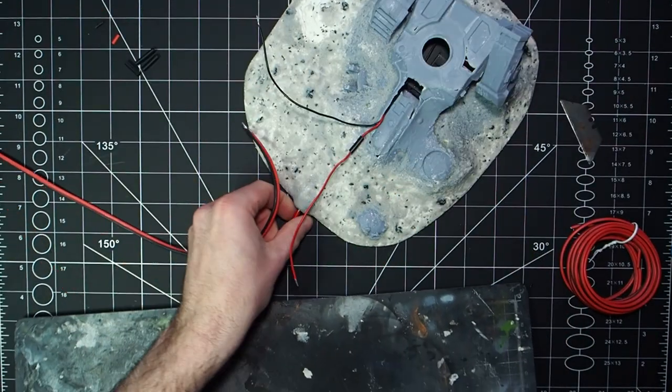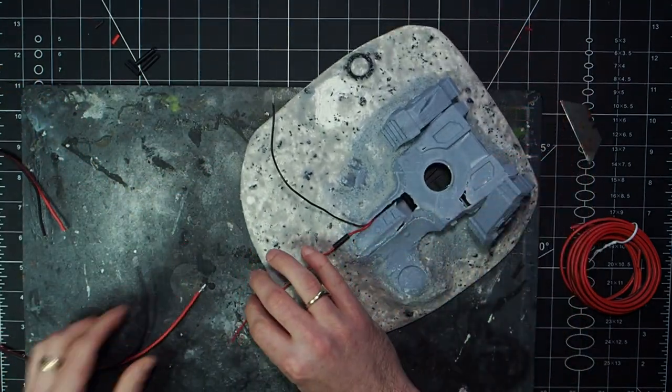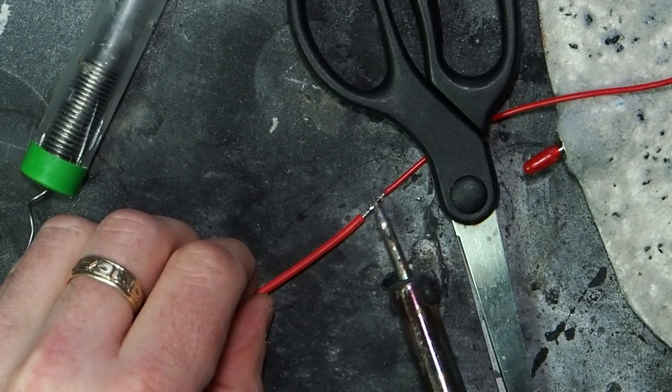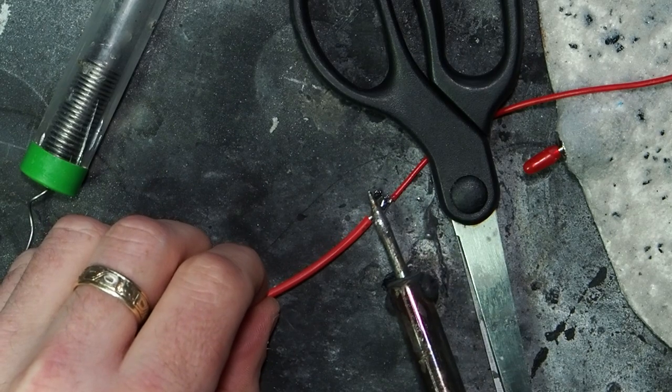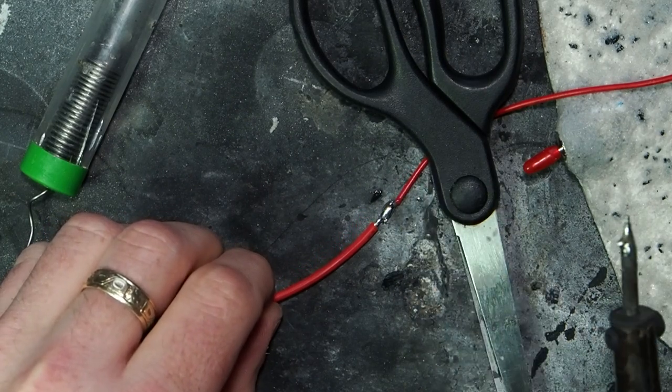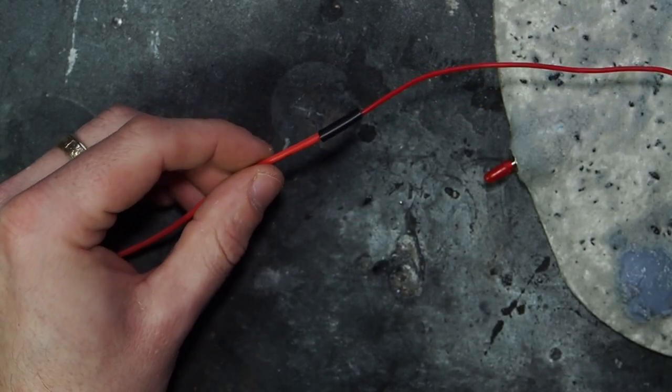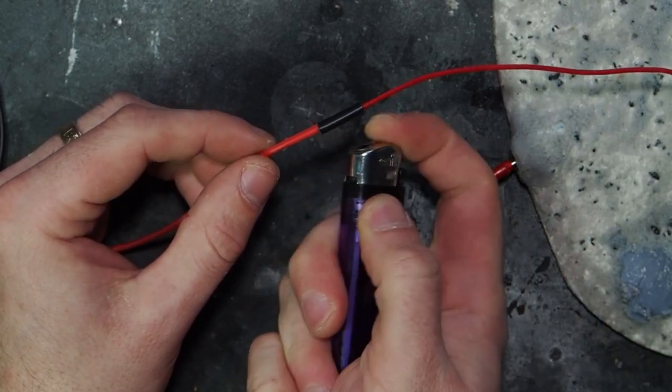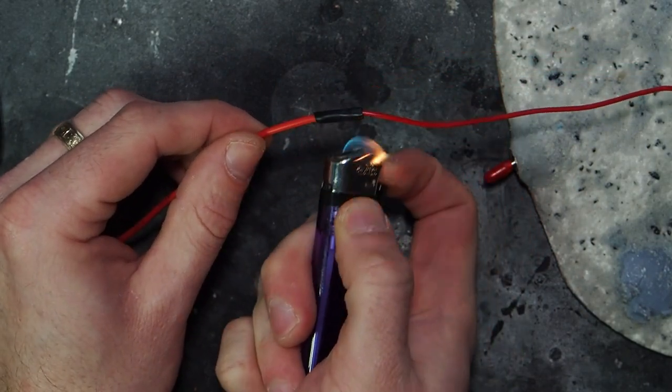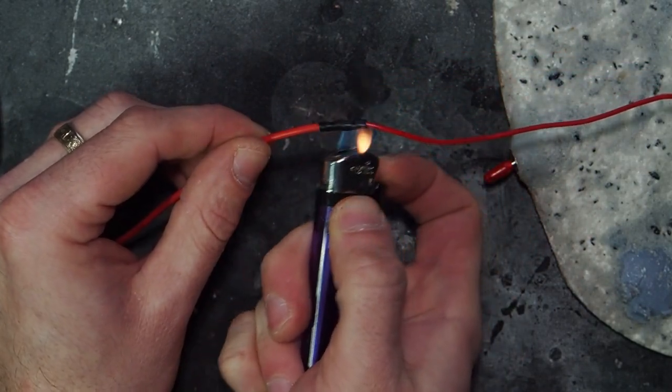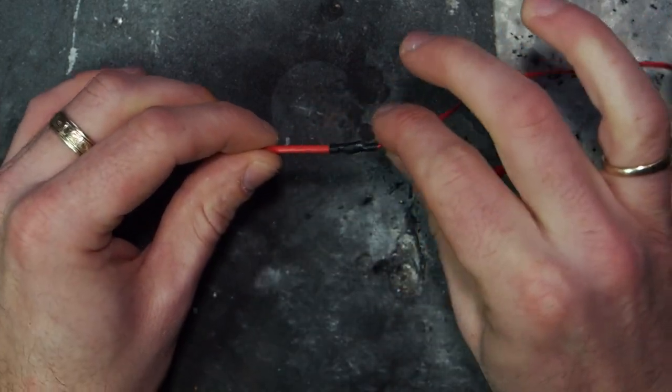With that done, the next thing to do is solder these on. So even though I'm color blind, even I can match up red to red and black to black. So this was just a simple matter of getting these connected. My soldering skills still have not improved since the last video. And then push the heat shrink tubing over the solder joint and heat that up with a lighter. That will help give the solder a lot more strength.